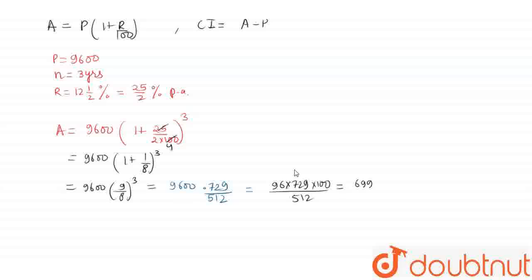This becomes 6998400 divided by 512. After calculating, this comes out to be 13668.75. So this is the amount.